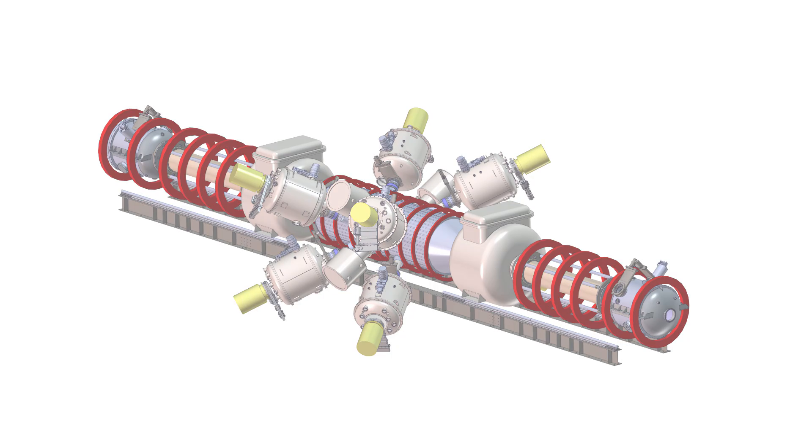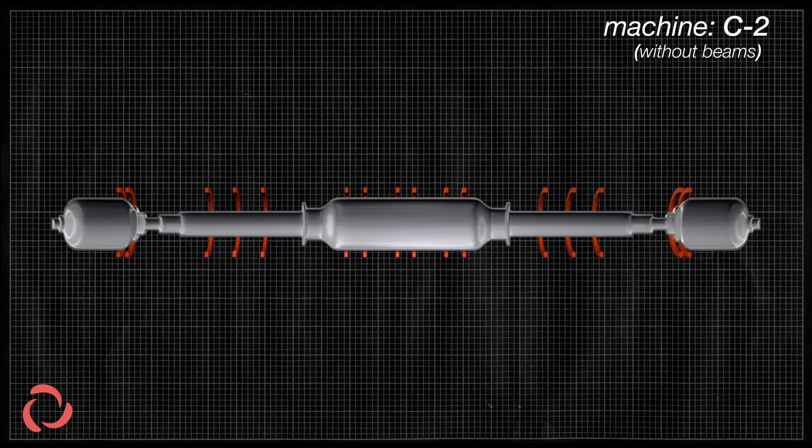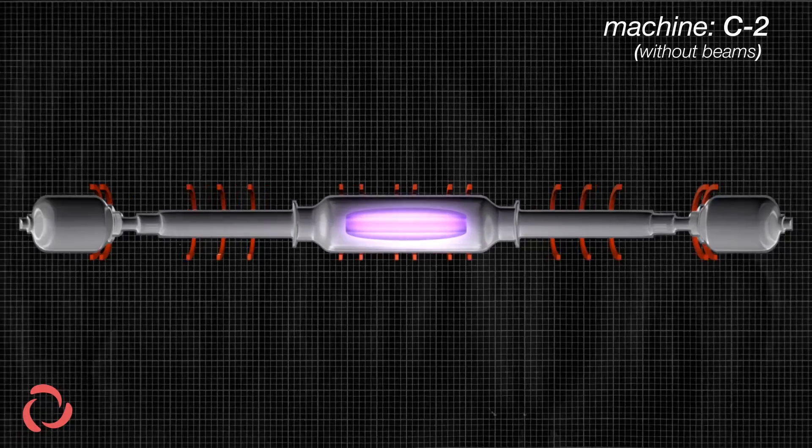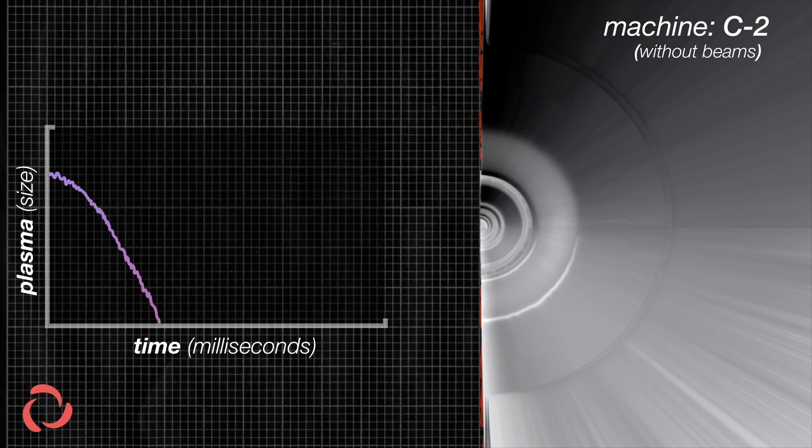TriAlpha's machine is as long as two buses. It creates smoke rings of gas and then slams them together at nearly a million kilometers per hour. This creates a hollow blob of gas at around 10 million degrees Celsius.